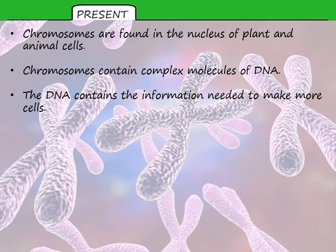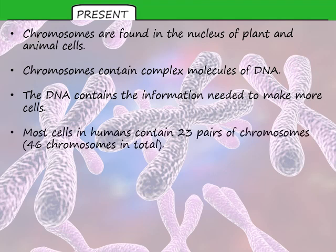DNA stands for deoxyribonucleic acid, but that's a very complex and long name. If you just call it DNA and can describe what it is, that would be perfect. Most cells in humans have 23 pairs of chromosomes altogether, which means you have 46 chromosomes in each cell. Of those 46 chromosomes, 23 come from your mum and 23 come from your dad, and they pair up — one from your mum and one from your dad — to make those 23 pairs.